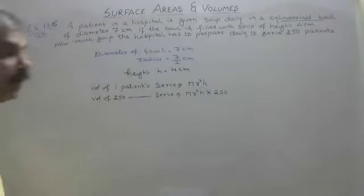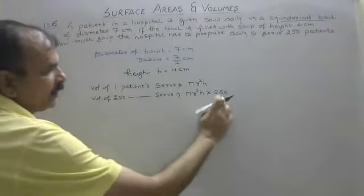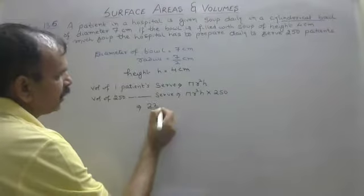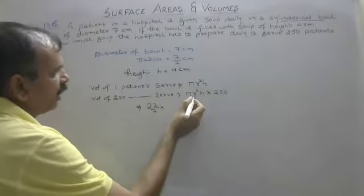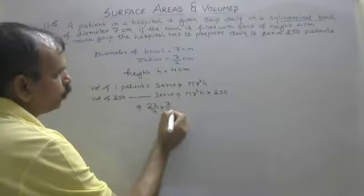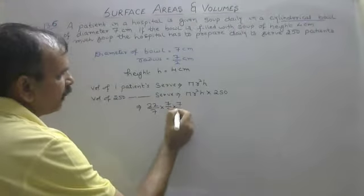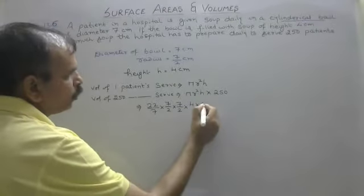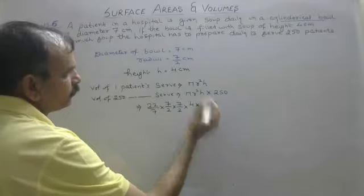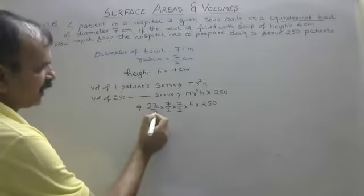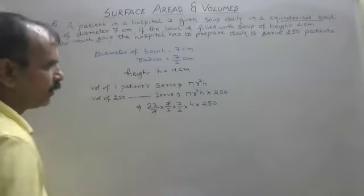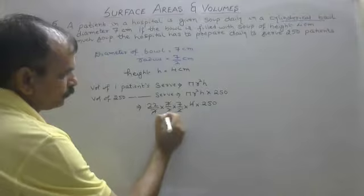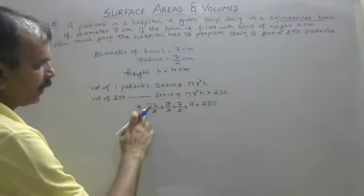Now we start with values. We start with volume of pi r square. So what is r? R is 7 by 2 into 7 by 2 into what is h? h is 4 into 250.